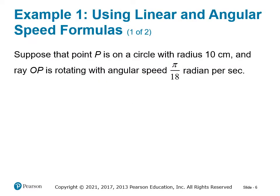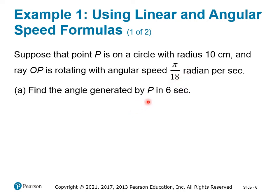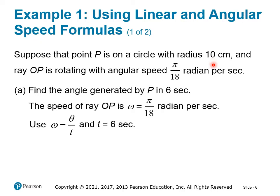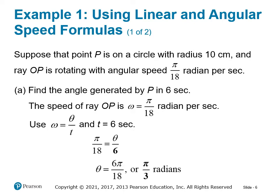Suppose that point P is on a circle with radius 10 centimeters and that ray OP is rotating with an angular speed of π/18 radians per second. This is our radius r, and this is our omega. We want to find the angle generated by P in six seconds, so we're looking for theta. Using omega equals theta over t, we plug in: π/18 equals theta over 6. Multiplying both sides by 6, we get 6π/18, which simplifies to π/3 radians.